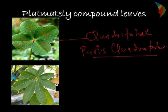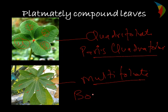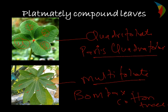The fifth and last type of palmately compound leaf is multifoliate. At the tip there are many number of leaves coming out, forming multifoliate leaves. The common example is Bombax, also called the cotton tree, which has this type of leaves.